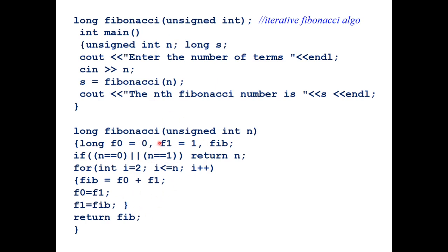A recursive approach is only chosen when it naturally mirrors the problem and results in a program that is easier to understand and debug — as in the Fibonacci or factorial cases where the formula translates directly into code. Here is the iterative Fibonacci: define f0=0, f1=1, then loop from 2 to n computing fib = f0 + f1, updating the values each iteration. You can try both methods with a large number to observe the time difference.